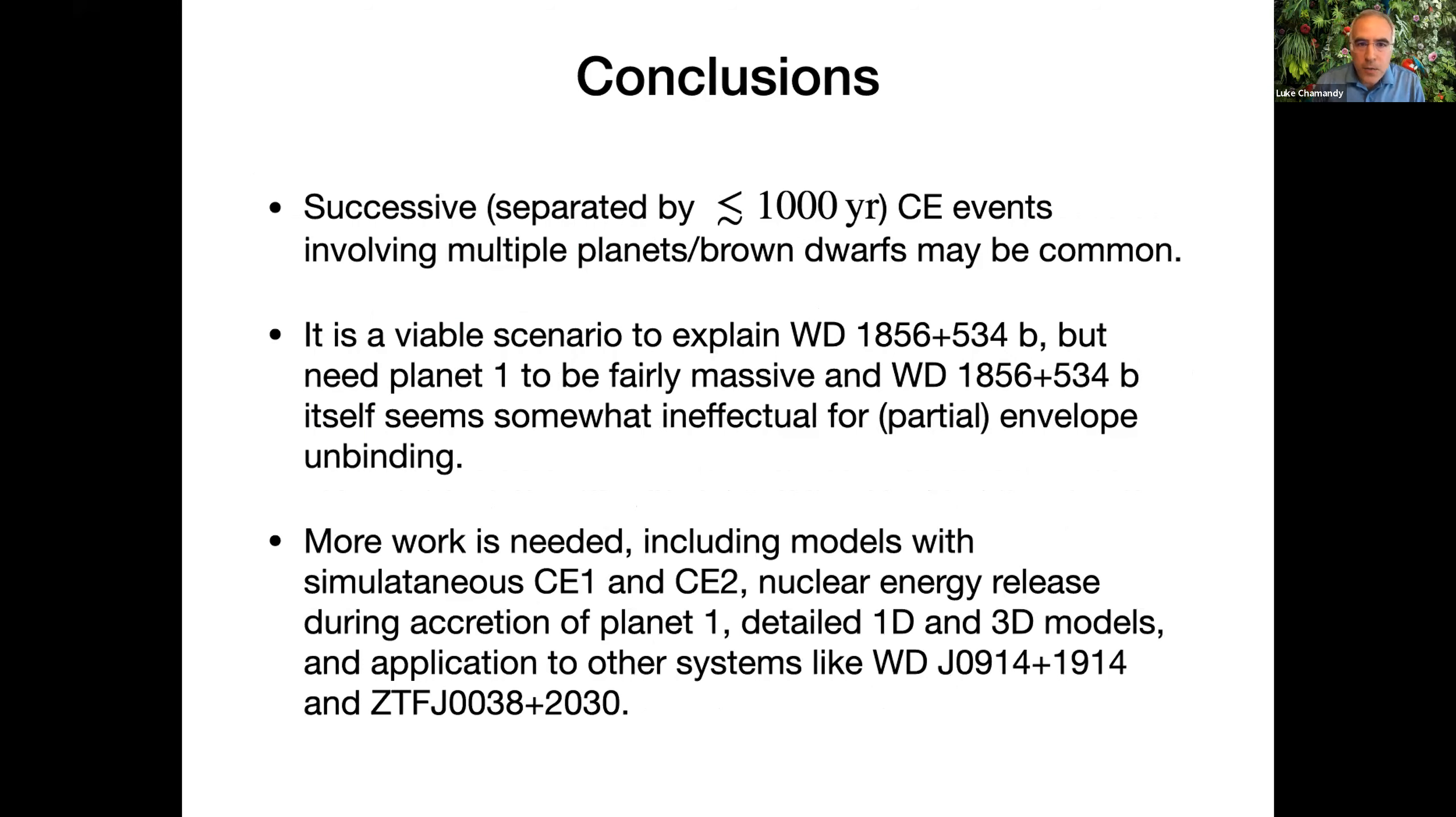So finally, the conclusions. Successive, and by successive I mean separated by less than a thousand years or so, common envelope events involving multiple planets or brown dwarfs may be common. It is a viable scenario to explain this system, but we need planet one to be fairly massive, more massive than what we mentioned in our paper when the parameters were not constrained by MESA. We need this observed planet itself to unbind only a very small part of the envelope in terms of the initial binding energy. So more work is needed, including models with simultaneous CE1 and CE2, nuclear energy release during accretion of planet one, detailed 1D and 3D models. It's very challenging to do 3D models of common envelope with planets, but we've started an application to other systems. Thank you very much for your attention.